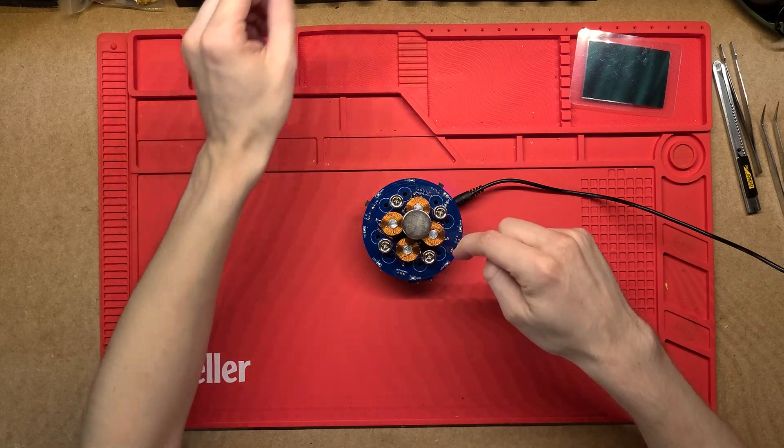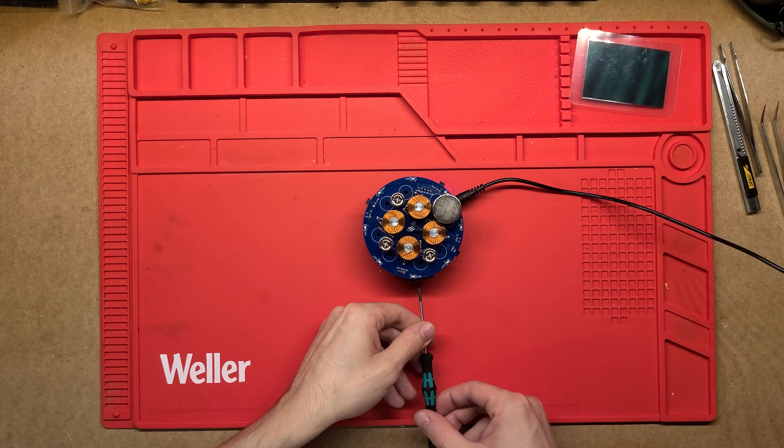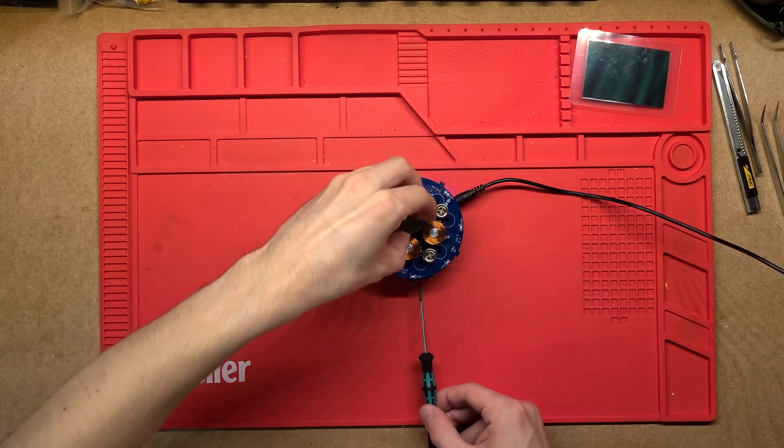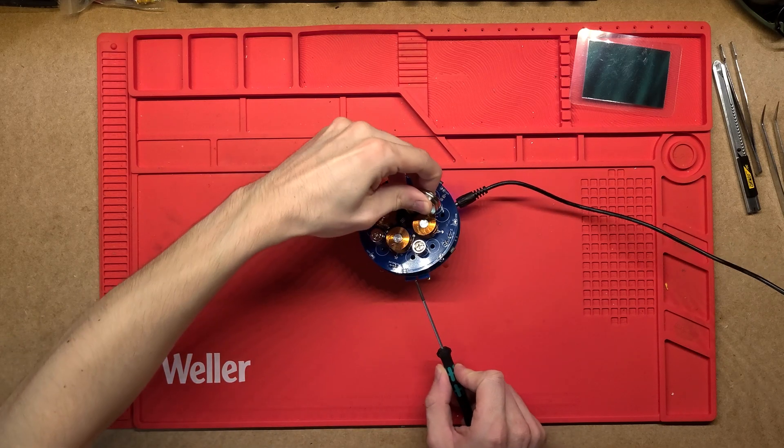You can see here if it does sit off center, all you've got to do is grab a little screwdriver and just adjust this potentiometer. I went the wrong way there but as you do that you will physically see the magnet shift towards one direction.